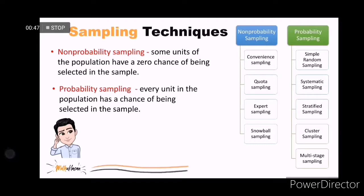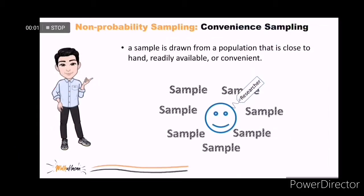The first type of non-probability sampling is the convenience sampling, also called accidental or opportunity sampling. This is a technique in which a sample is drawn from the part of the population that is close to hand, readily available, or convenient. Example: if you stand outside a shopping center and hand out questionnaire surveys to people or interview them as they walk in, the sample of respondents you will obtain will be a convenience sample.